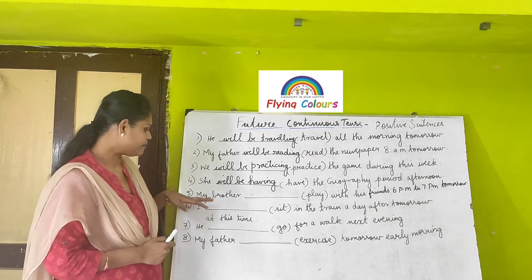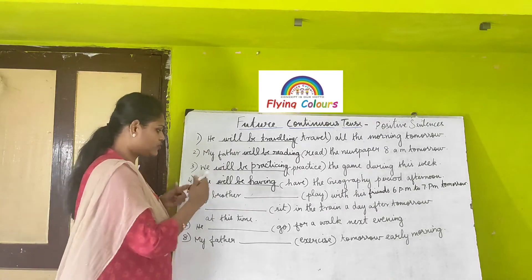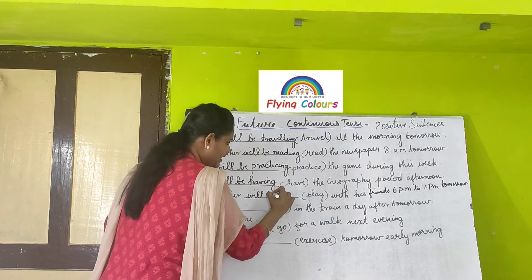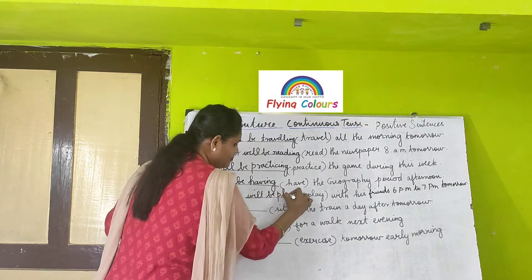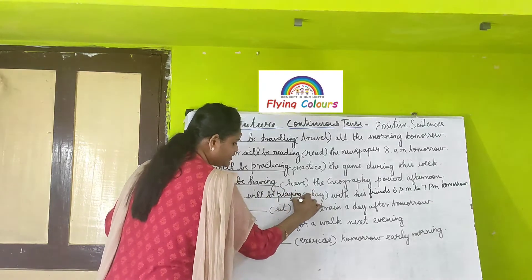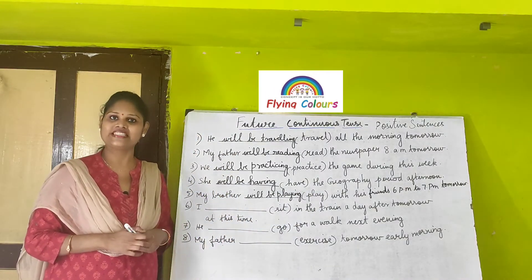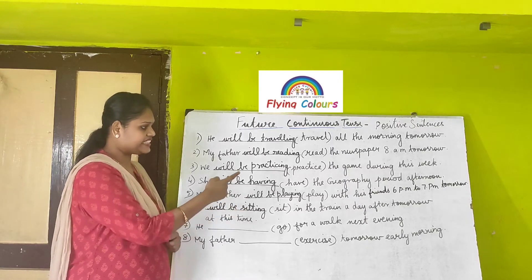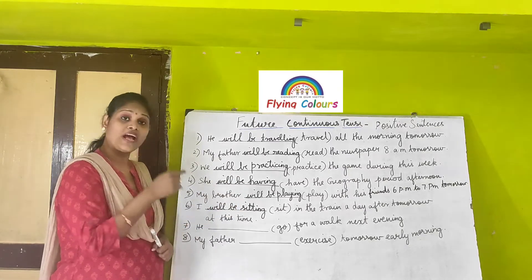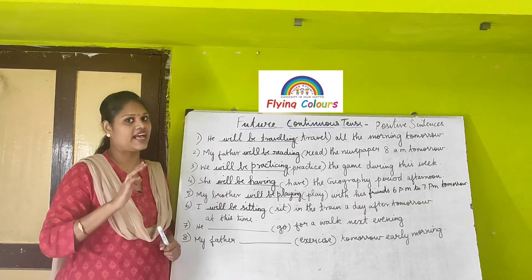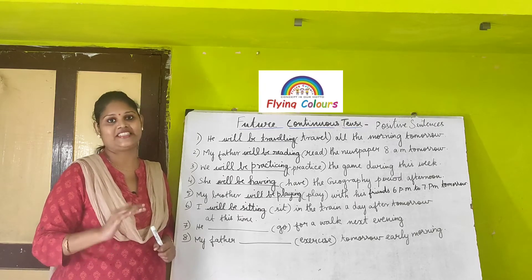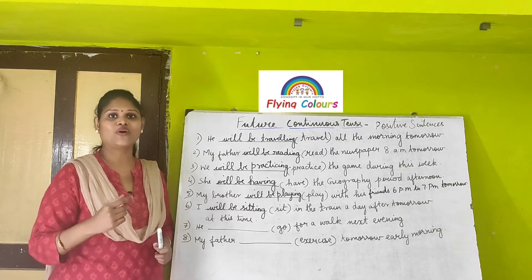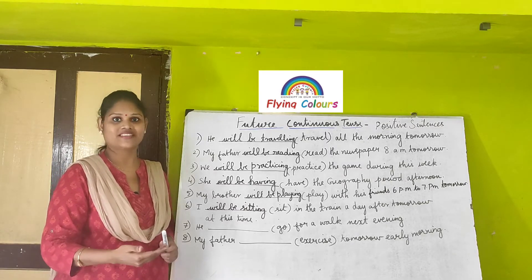Next: 'My brother ___ play with his friend from 6 p.m. to 7 p.m. tomorrow.' My brother is the subject, formula is subject plus will plus be plus present participle. 'Play' becomes 'playing.' Then: 'I will be sitting in the train a day after tomorrow at this time.' The action is not completed — it is going to happen over a period of time in the near future.